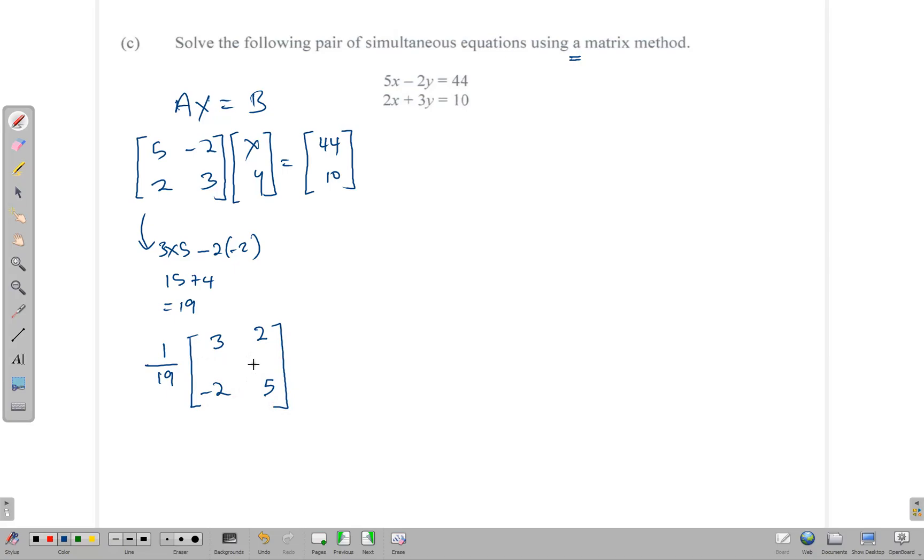And so our inverse matrix is going to be 1 over 19 multiplied by the adjoint matrix, which is to switch up this matrix. We switch these two. That becomes 3 there. 5 goes down there. This negative 2 becomes positive 2. And that positive 2 becomes negative 2. But because we're going to be using it, it makes better sense to integrate that fraction inside by just writing everything over 19.